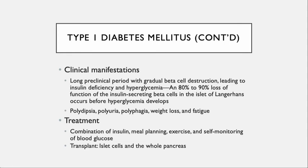Clinical manifestations of type 1: there's a long preclinical period as the pancreas loses beta cells, with patients maintaining an asymptomatic course for a prolonged time. At the point of 80–90% loss of beta cell function, hyperglycemia develops with the resultant polydipsia, polyuria, polyphagia, weight loss, and fatigue.